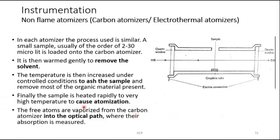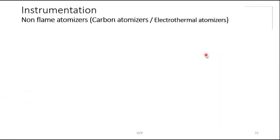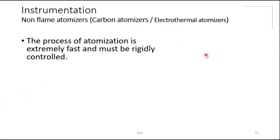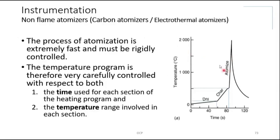The free atoms are vaporized from the carbon atomizer into the optical path where absorption is measured. The process of atomization is extremely fast and must be rigidly controlled. On a time–temperature diagram: the x-axis is time, y-axis is temperature. Drying is slow — taking approximately 60 seconds.